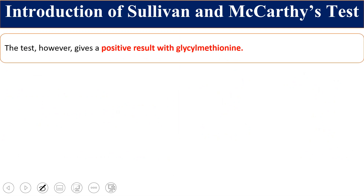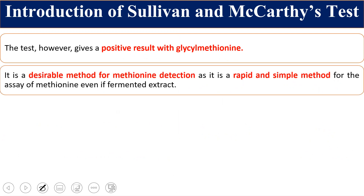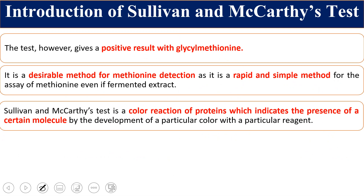However, this test will also give a positive result with glycylmethionine, a derivative of methionine where glycine and methionine are joined together as a dipeptide. This is a desirable method for methionine detection and is a rapid and simple method for the assay of methionine even in fermented extract. It is a color reaction, so we get a colored product that indicates the presence of methionine molecules.